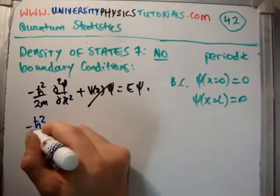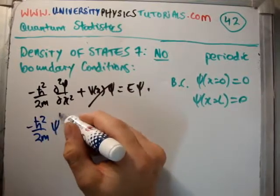It becomes minus h bar squared over 2m psi double prime is equal to E psi.